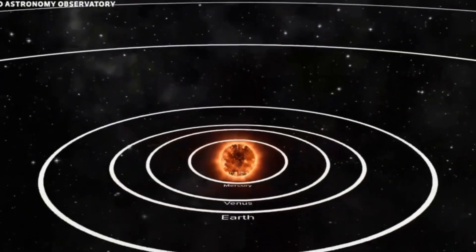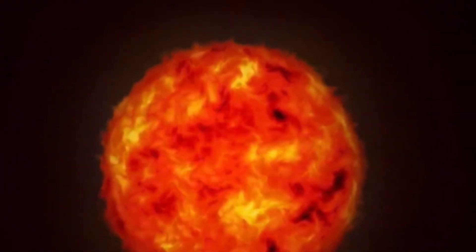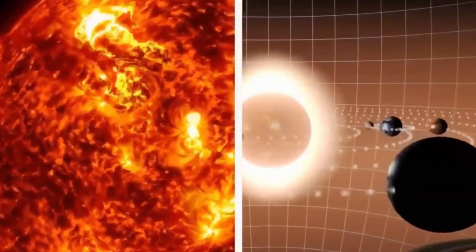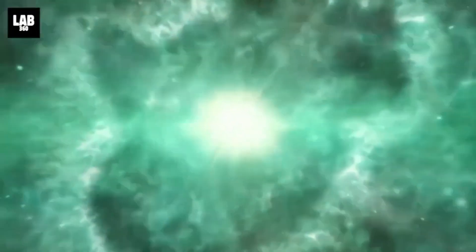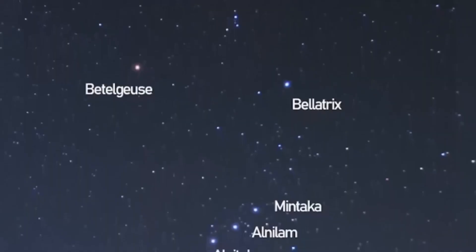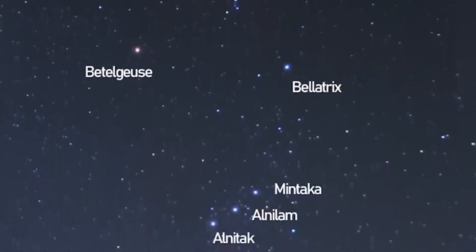But Betelgeuse is not just any star. It's a red supergiant nearing the end of its life. In astronomical terms, it is a ticking time bomb destined to explode in a spectacular supernova that could outshine the moon and be visible in broad daylight.